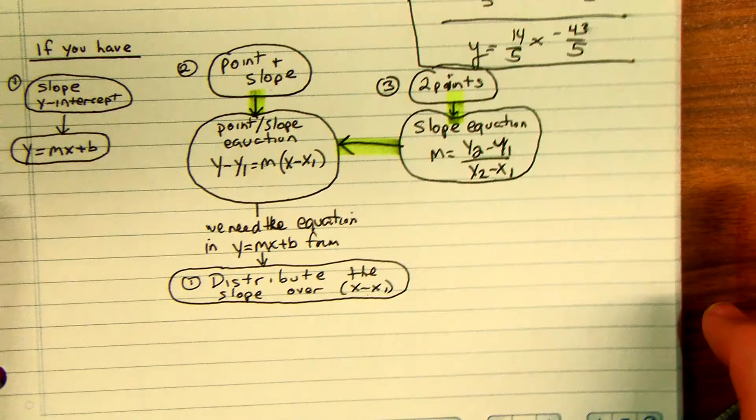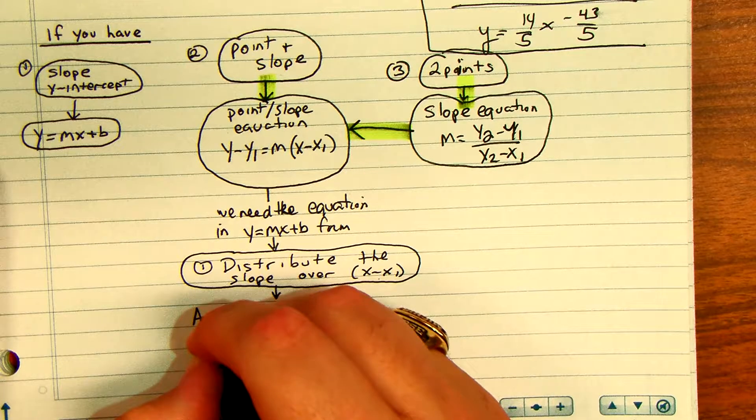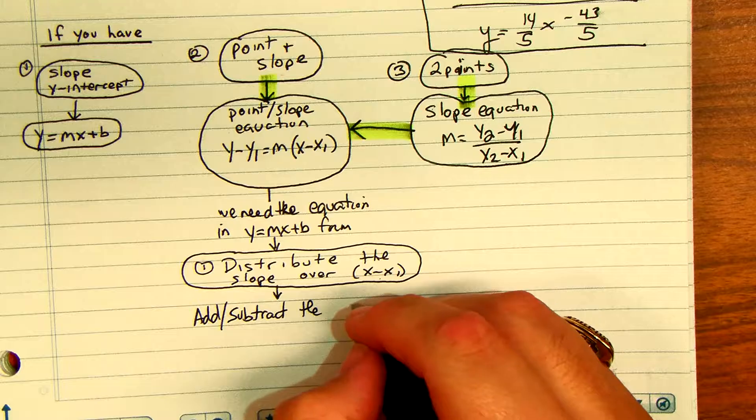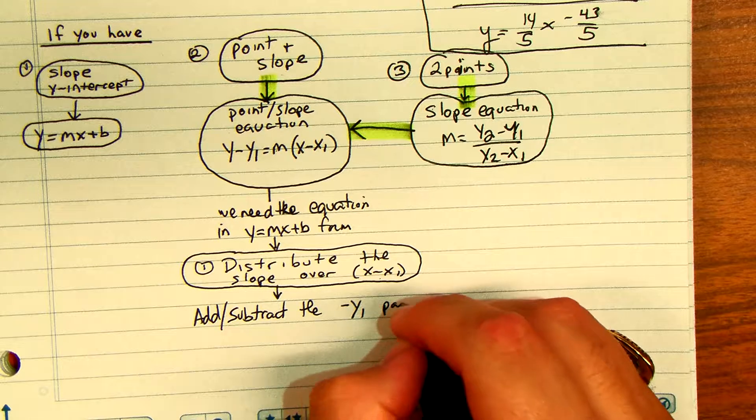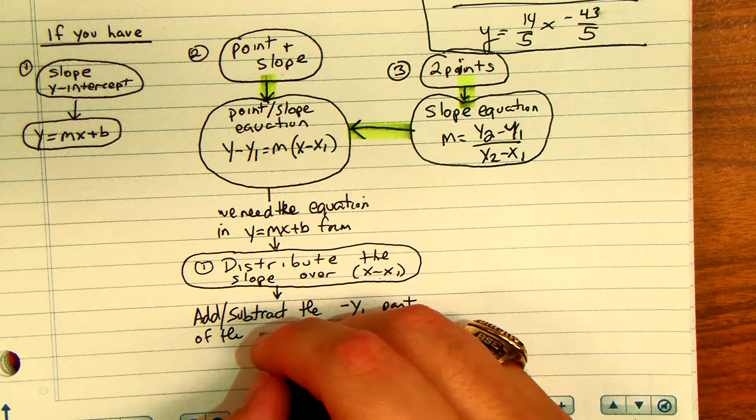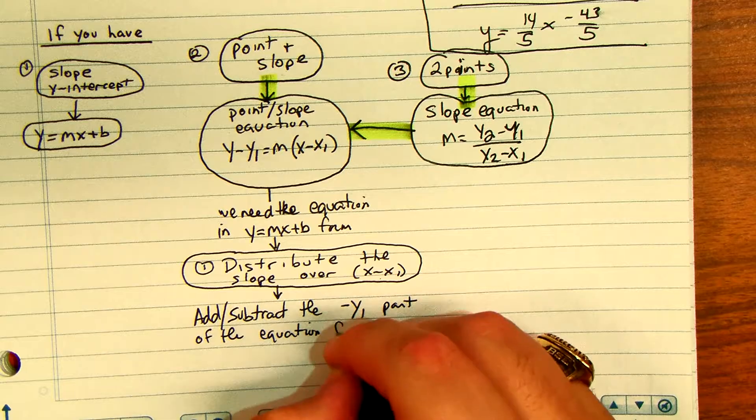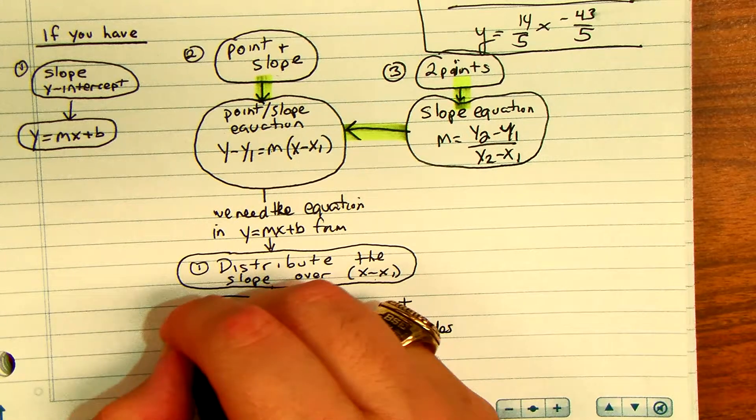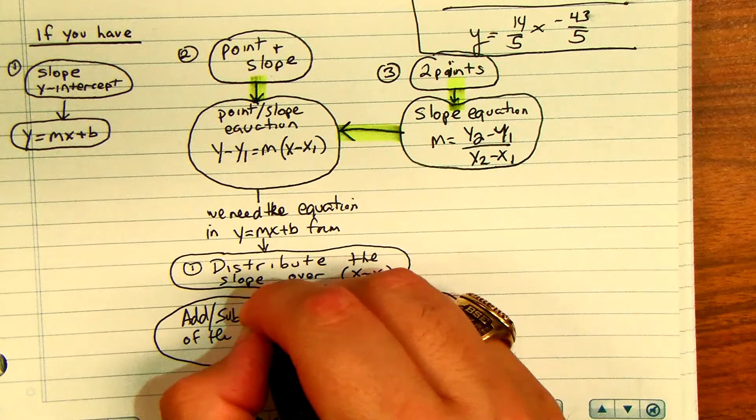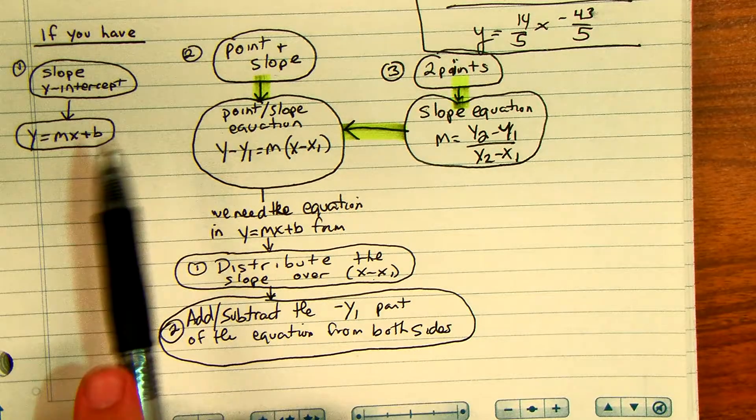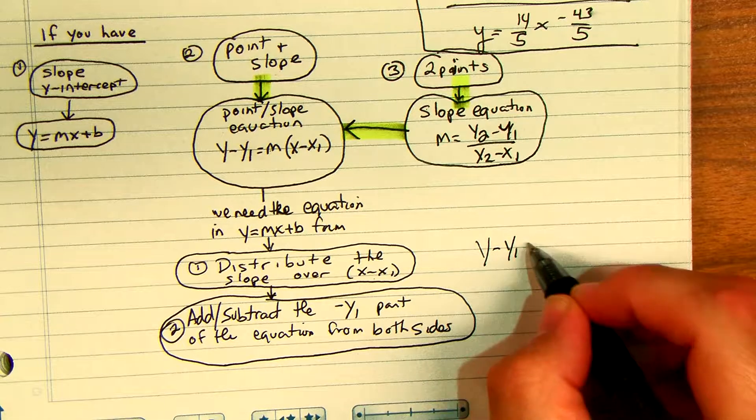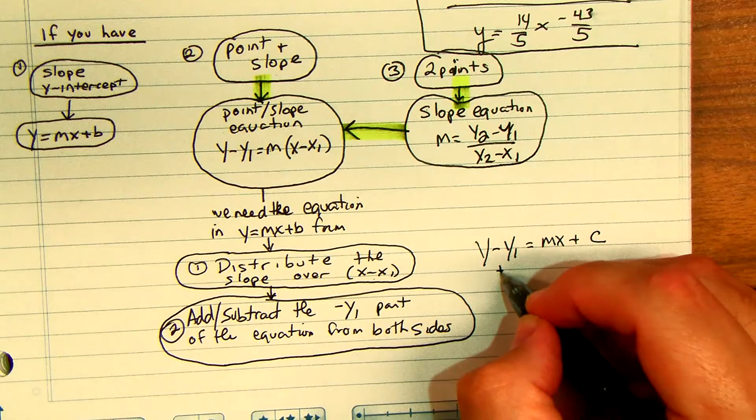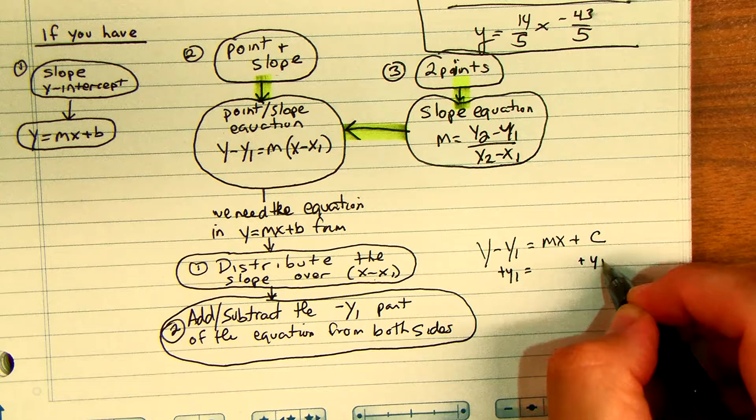The second step: add or subtract the minus y1 part of the equation from both sides. So when we have the equation y minus y1 is equal to like say you have mx plus some number c, you're going to add that y1 to both sides. So that's really what's going on there.